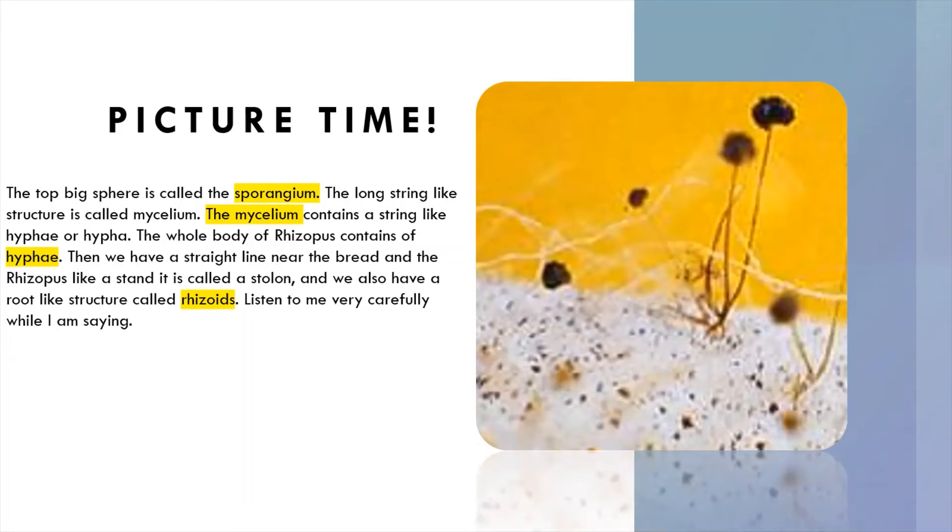There's actually a big straight line attaching the rhizopus to the bread mold, that's called the stolon. We have roots for the rhizopus to hold it together to the bread mold.